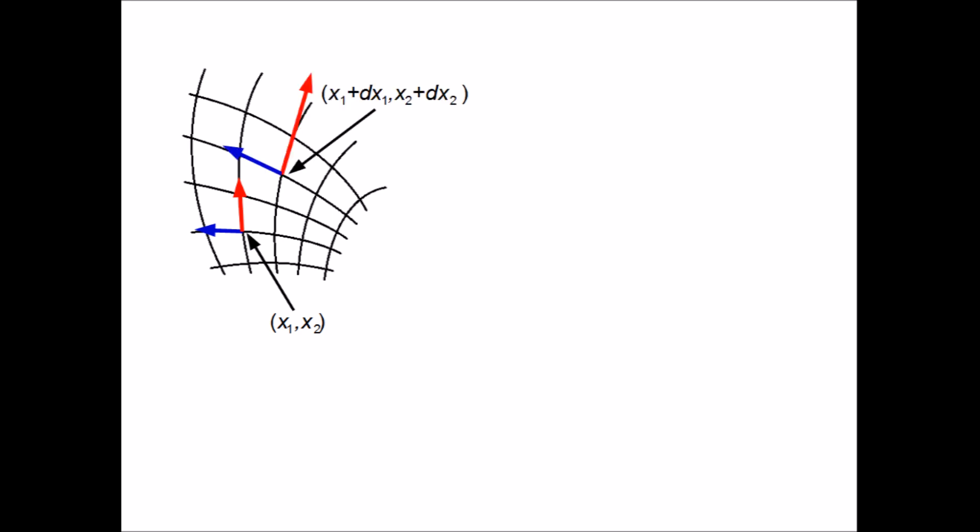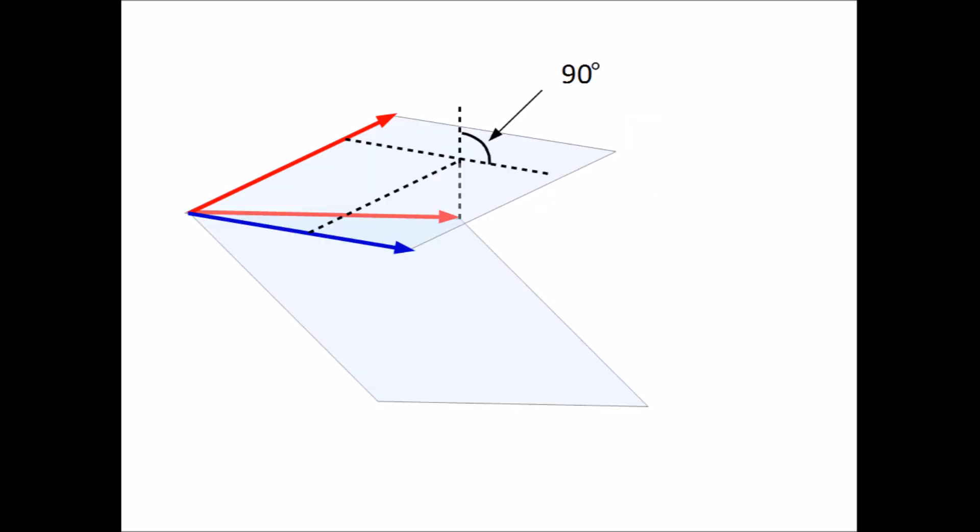Let us now consider what happens to the basis as we go from the point x1 x2 to x1 dx1 x2 dx2. The plane defined by the basis at x1 x2 will be different at the new point. The new basis e1 prime and e2 prime can be expressed in terms of the old ones by moving the new plane to the point x1 x2. Projecting e1 prime to the original plane, we see that it has components along e1 and e2 but also in a direction normal to the surface. Similarly, e2 prime will have a projection along these three axes.